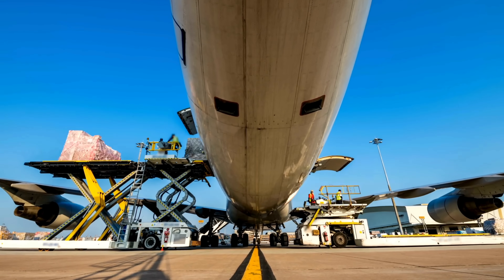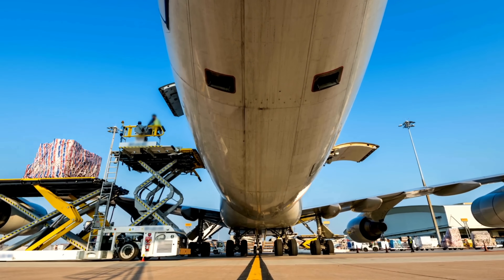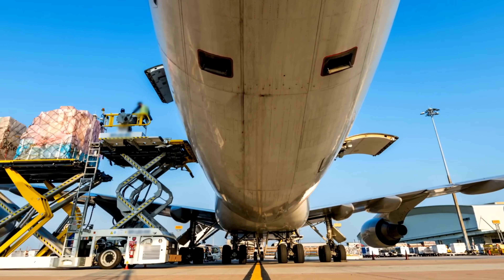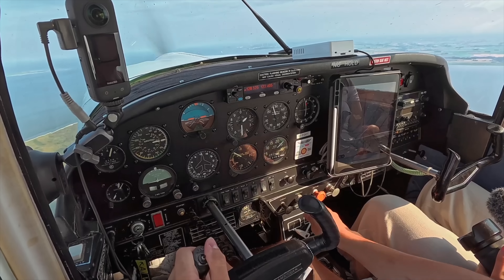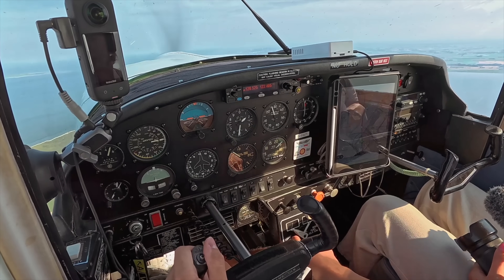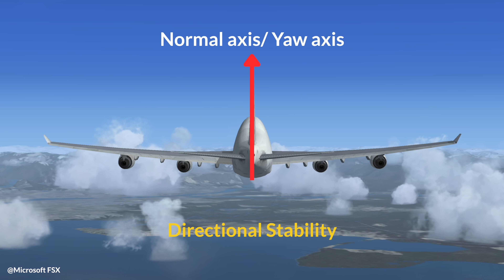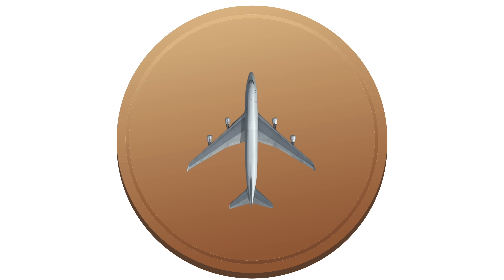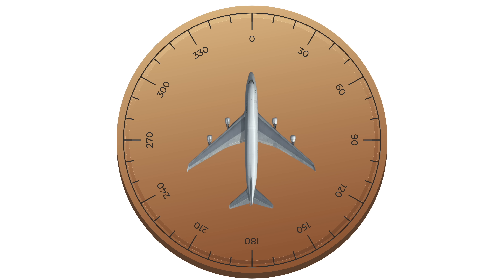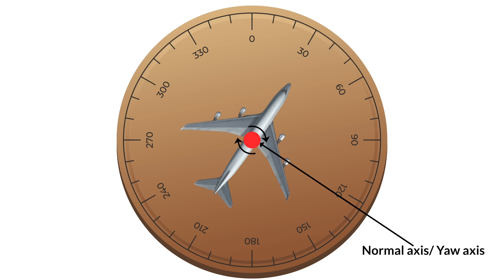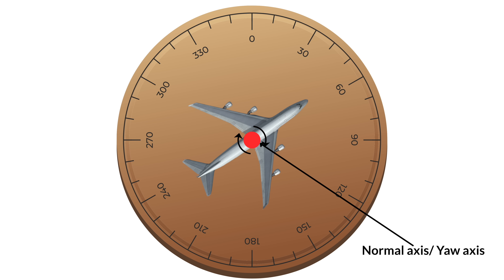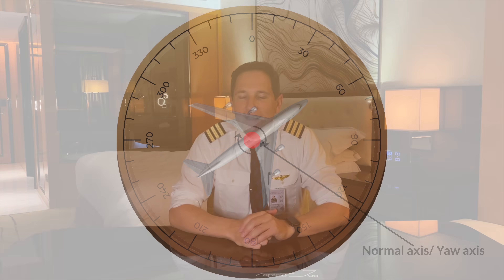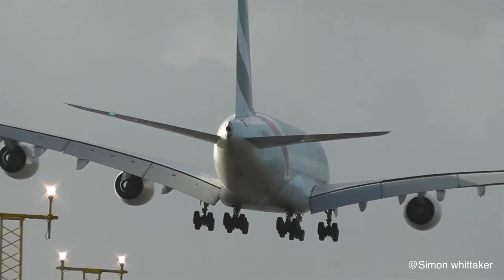Cargo pilots and loading teams work closely together to calculate the weight of the load and where to place it within the cargo hold to ensure the center of gravity remains balanced — and this applies to any plane. Flight along the normal or yaw axis is called directional stability. Think of the turntable: when you turn on it, you are turning in direction, so it essentially acts as your directional heading indicator. Controlled yaw along this axis allows the pilot to maintain a heading during crosswind conditions.